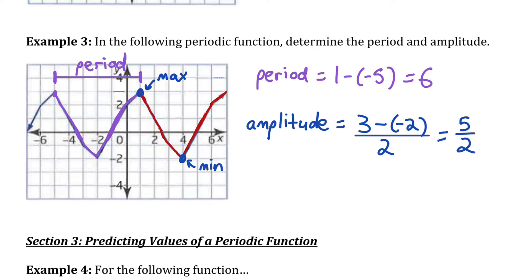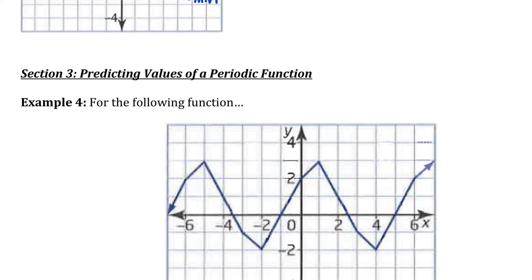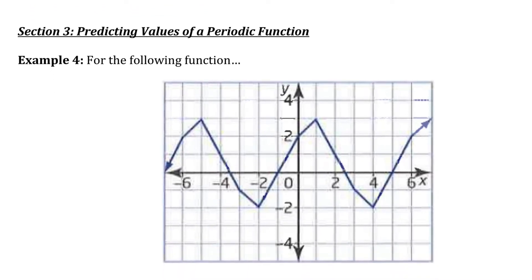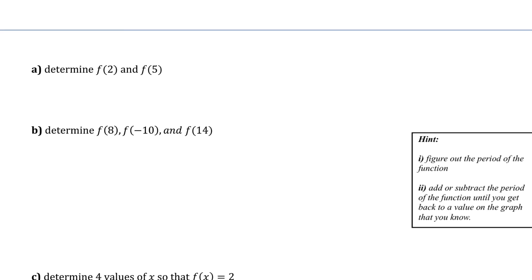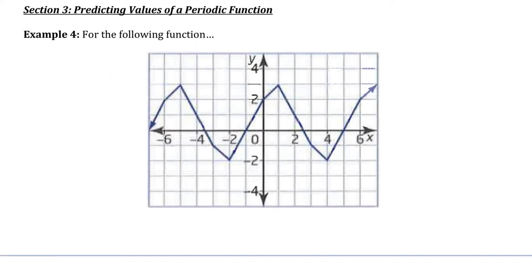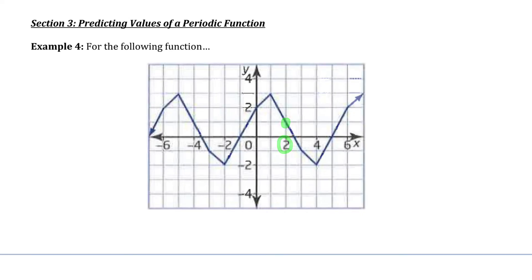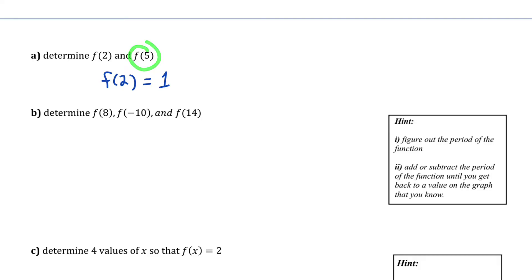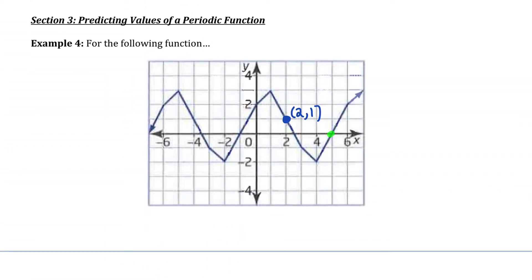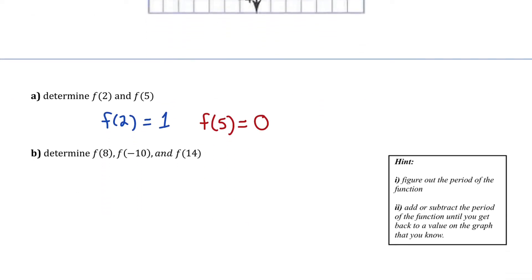Now let's work with that same function to predict future values, using the principle that the pattern of y-values repeats at regular intervals. The question asks for f(2) and f(5). When x is 2, the function is at the point (2, 1), so f(2) = 1. When x is 5, the function is at (5, 0), so f(5) = 0.